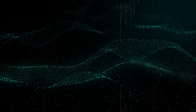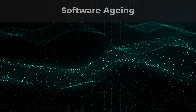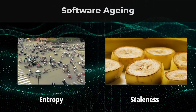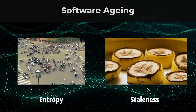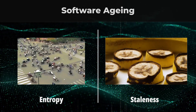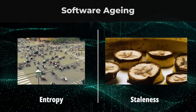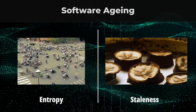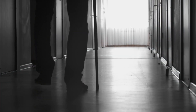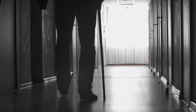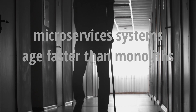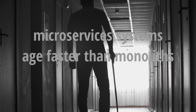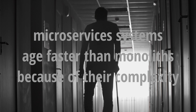There are another two issues that are rarely mentioned: entropy and staleness. The reason why there is little material about them is that they usually emerge in a mature system. It is the way all software ages. However, microservices systems tend to age faster than monoliths because of their complexity.